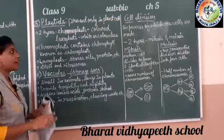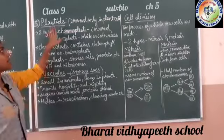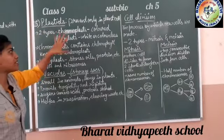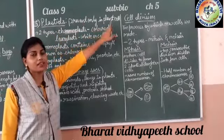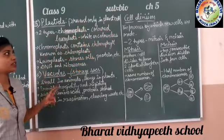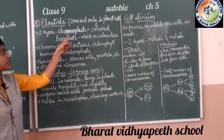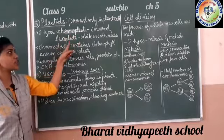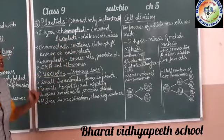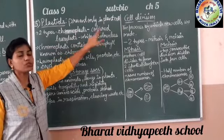After mitochondria, our next cell organelle is plastids. Plastids are cell organelles which are only present inside the plant cell. Plastids are mainly of two types: first is chromoplast, and second is leucoplast. Leucoplast is a colored type of plastid which shows some type of colors on the plant cells.